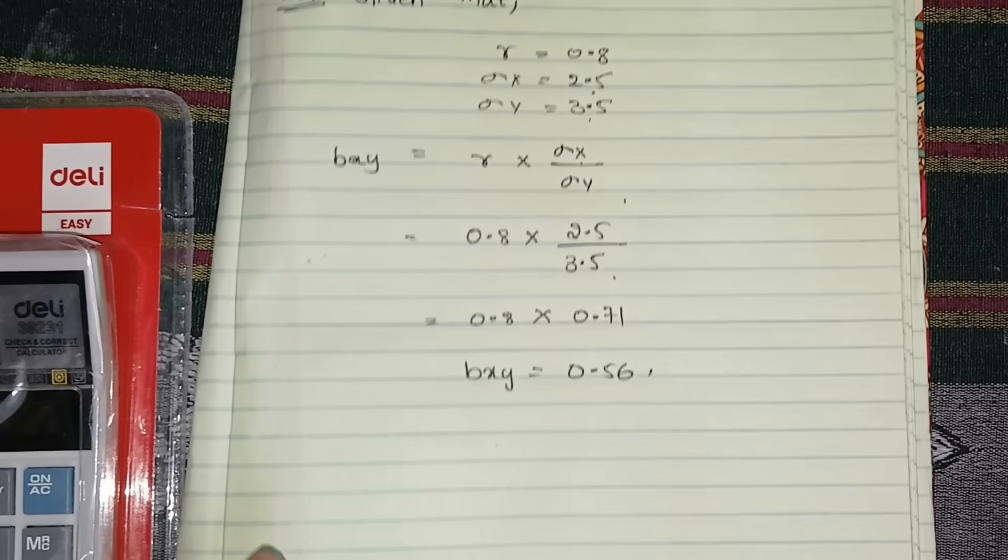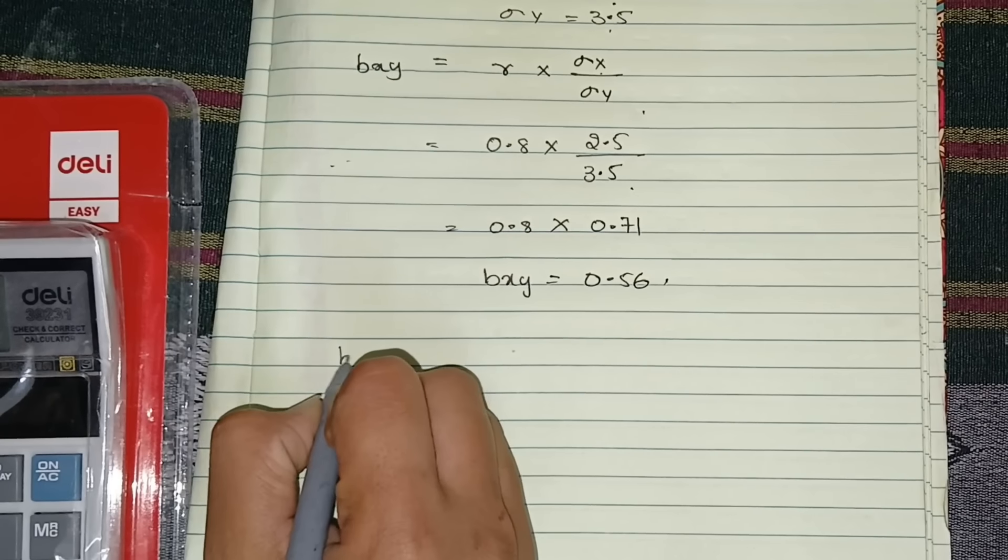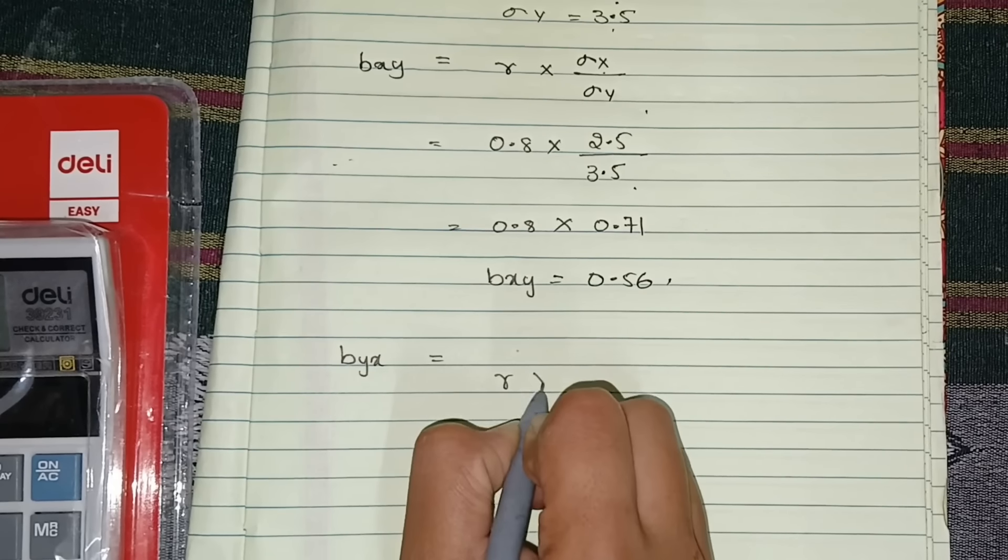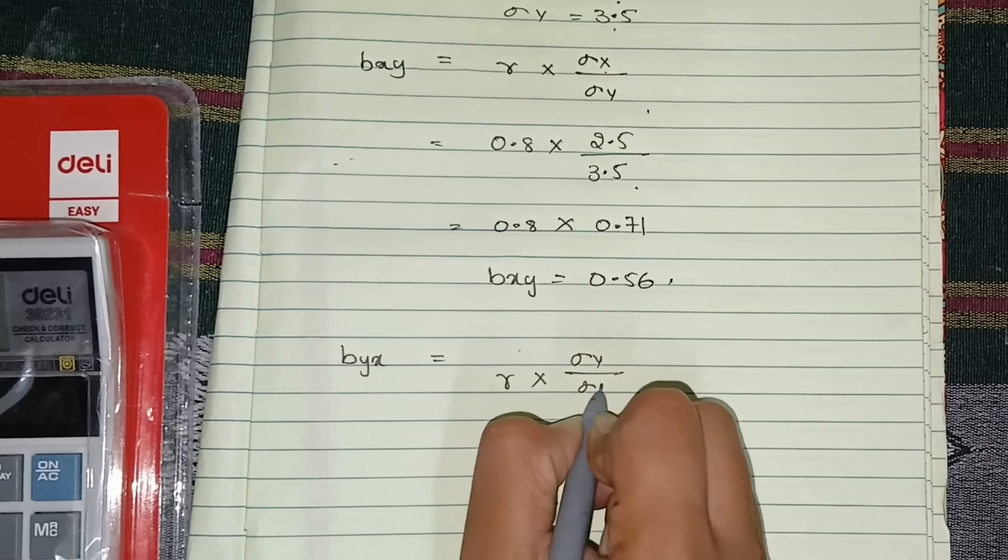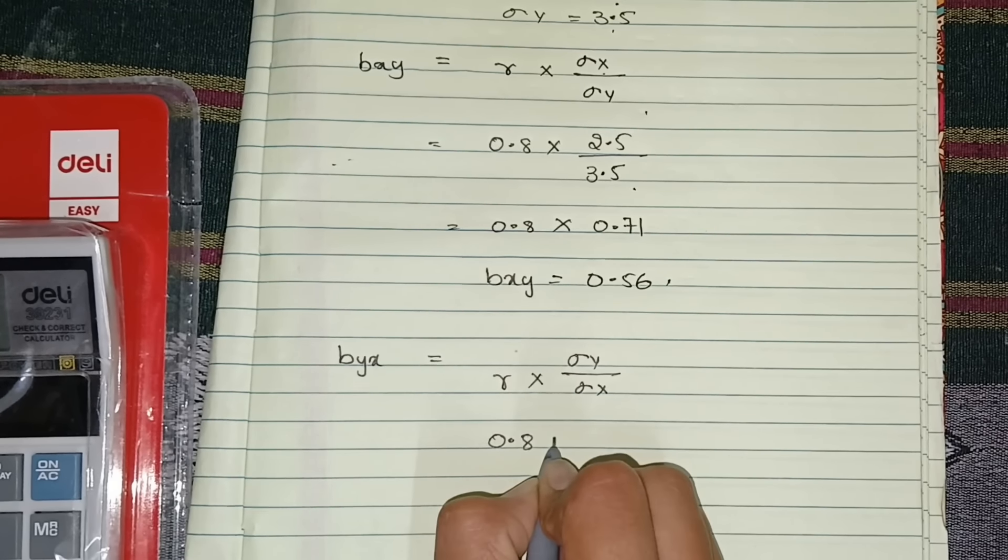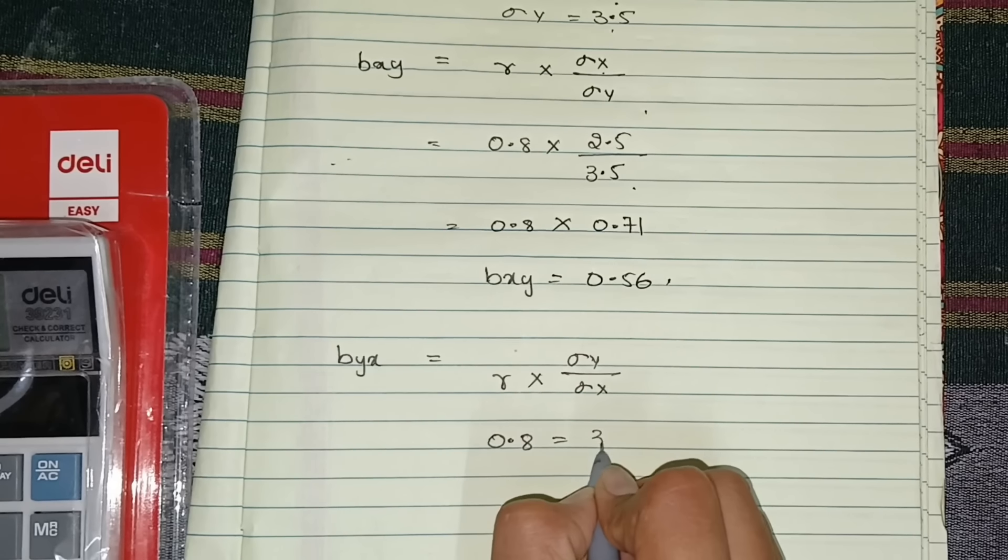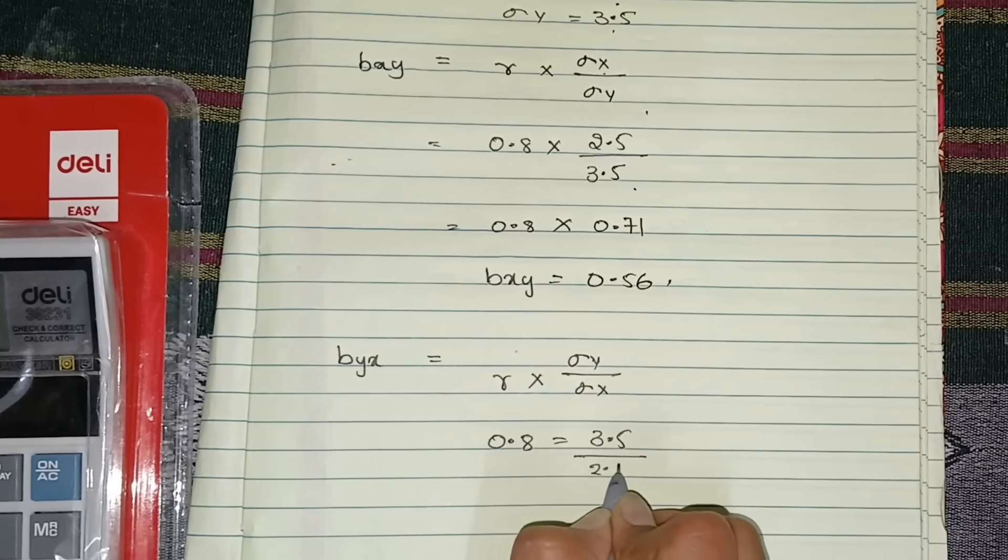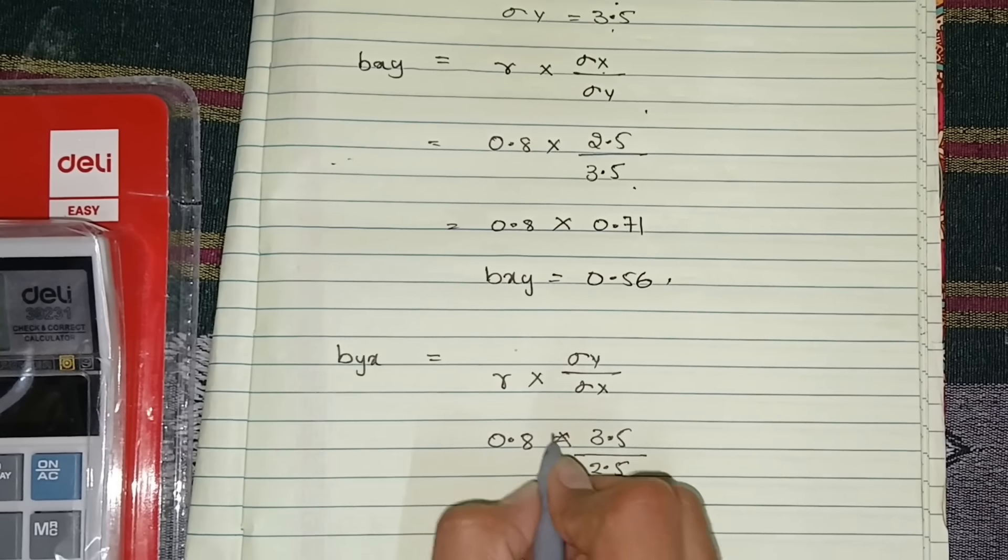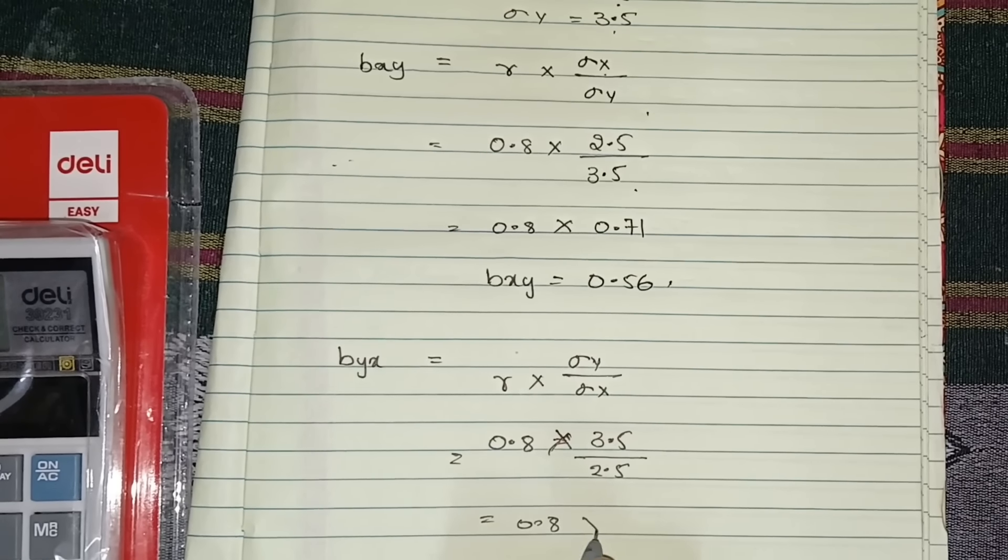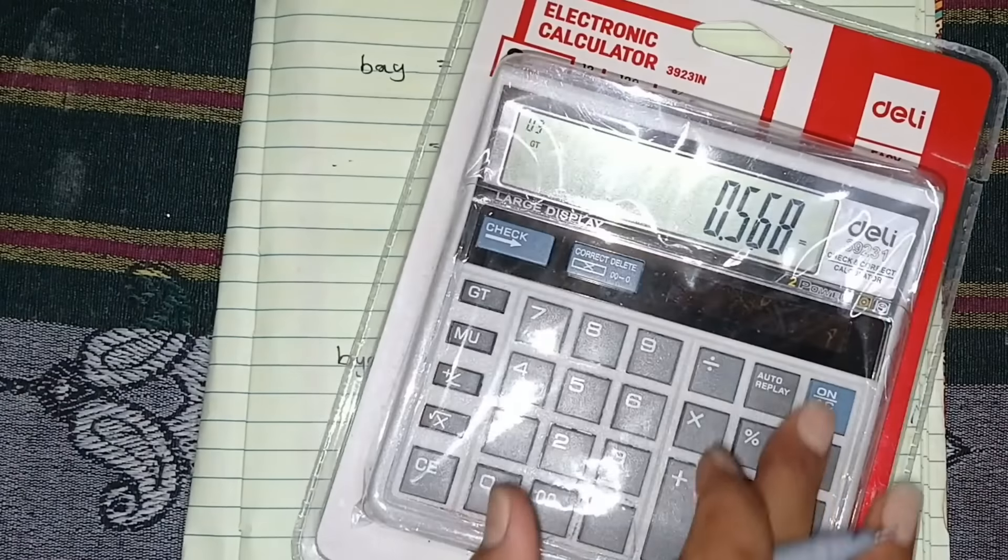Now we need to calculate byx. What is the formula of byx? r into standard deviation of y divided by standard deviation of x. r value is 0.8, standard deviation of y is 3.5, standard deviation of x is 2.5.